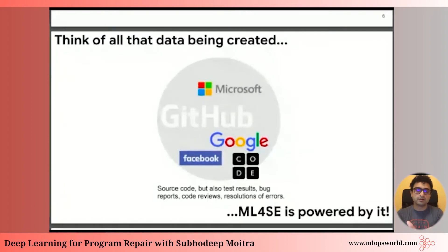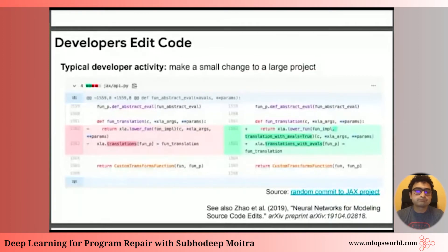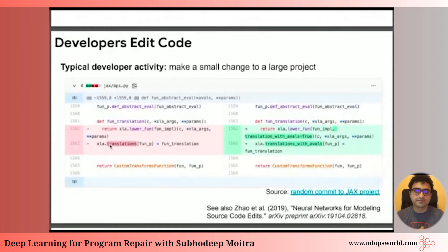We're going to focus on an approach about how to learn to edit software. To motivate this, here's a screenshot of a commit on a GitHub project — a random commit to the JAX project. The typical code commit diff UI is in effect: the stuff on the left is code that was before, the stuff on the right is code that was after, and the red things are what changed. The crux is that if we could learn to mimic these patterns — what the developer is doing by looking at these small changes to large projects — we could probably begin to do something useful.